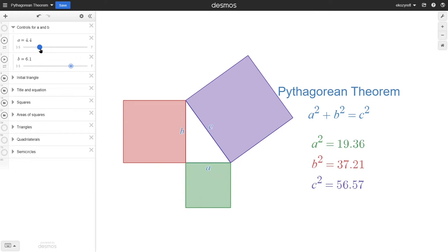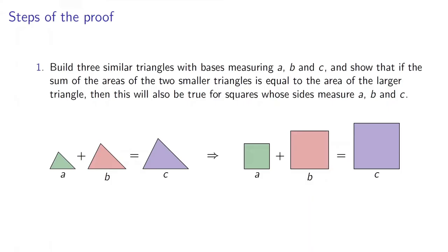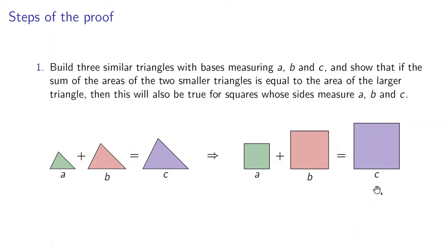To do that, we are going to use three similar triangles that are hidden inside the original right triangle. The proof will be presented in two steps. First, we will build three similar triangles with bases measuring A, B and C, and show that if the sum of the areas of the two smaller triangles is equal to the area of the larger triangle, then this will also be true for squares whose sides measure A, B and C. Second, we will find three similar triangles hidden in the original right triangle, such that the sum of the areas of the two smaller ones is equal to the area of the larger one. And with that, we will have proved the Pythagorean theorem.